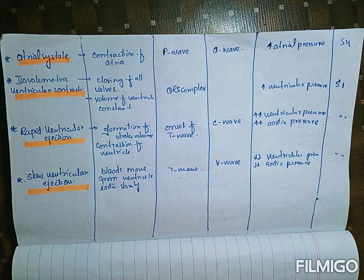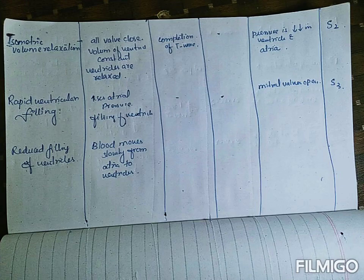The fourth phase is slow ventricular ejection. The remaining blood in the ventricle moves slowly toward the aorta. This phase corresponds to the T wave on the ECG and the V wave on the venous pulse pressure curve. Because the speed has slowed, both ventricular and aortic pressure begin to decrease in this phase.